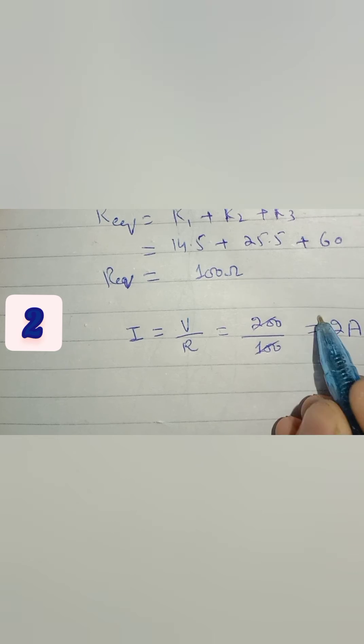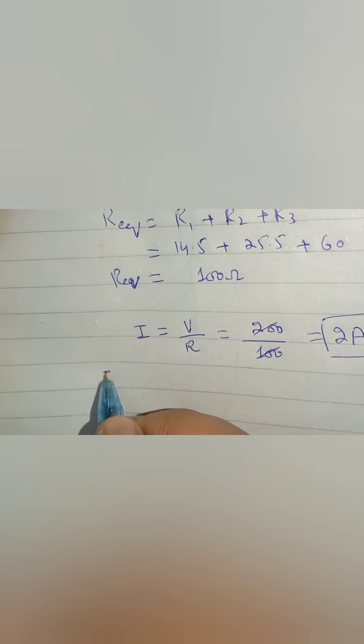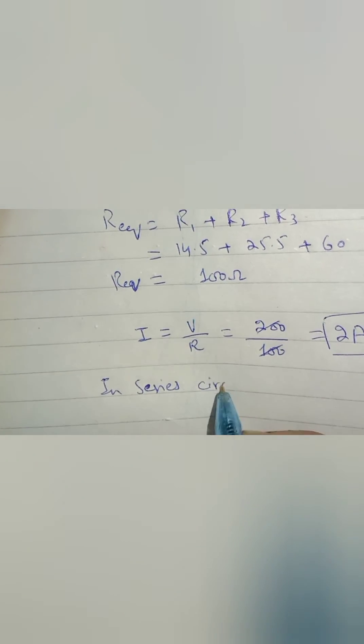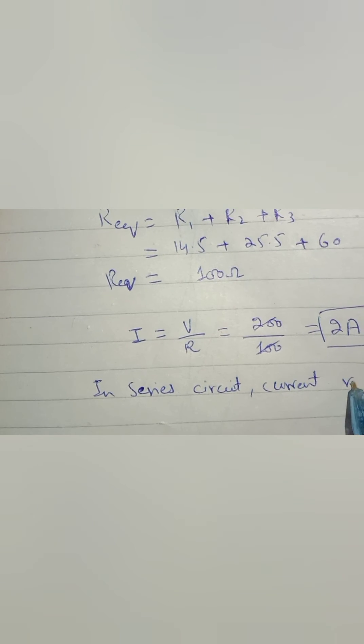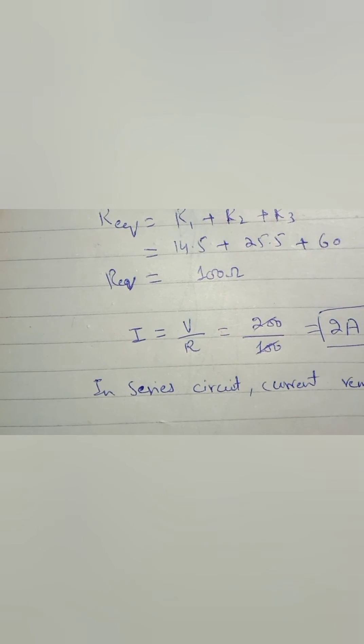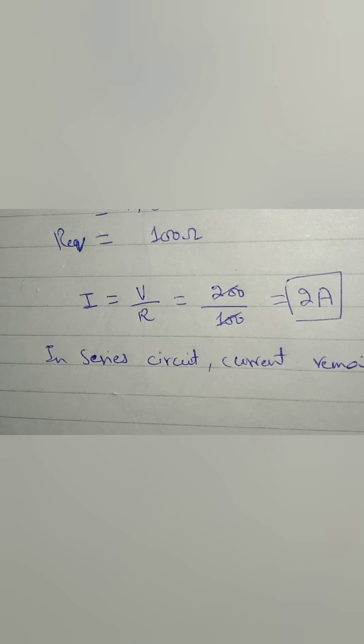Because we know in series circuits, current remains the same through all resistors. Now we can find the voltage across R1 because we have both the values of current and resistance.